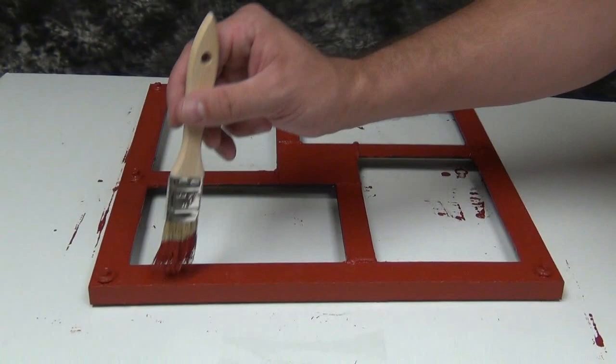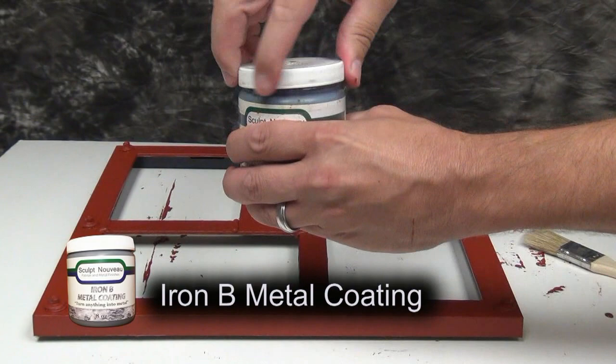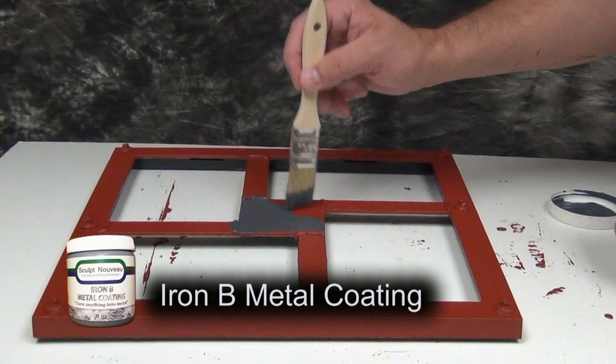Once the Primit has dried, you're ready to apply your Iron B metal coating. Make sure you shake that up really good before use because it does contain real iron particles and those need to be properly suspended before application. When you paint this on, you want to apply a uniform coating all over the surface for the first coat.